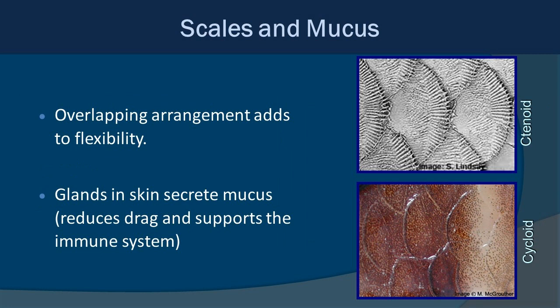Fish are well known for having scales, and there are several different types. Their overlapping arrangement adds flexibility and helps streamline the fish, making them faster and protecting them. Along their skin are also glands that secrete mucus — if you've ever touched a fish, you've noticed it feels slimy, and that's why. This slime both reduces drag and helps support the fish's immune system. That's one reason why, during seining or net collections, I always have students use cups and bowls to scoop up fish instead of their hands, because rubbing off that slime coat can leave them open to health problems.